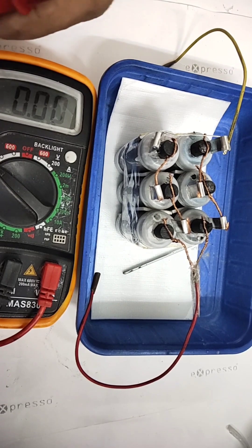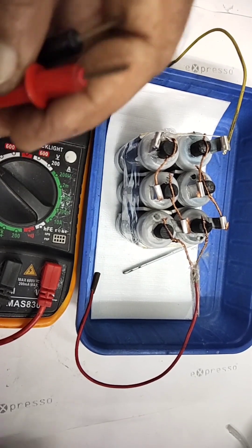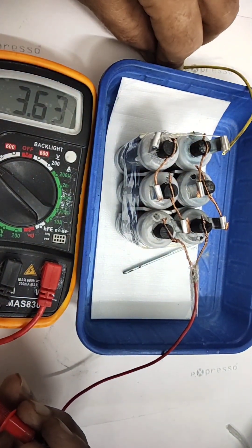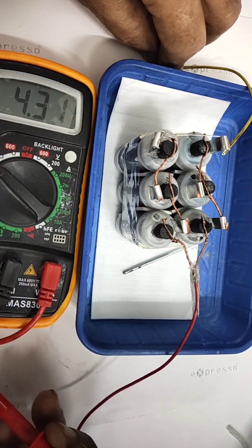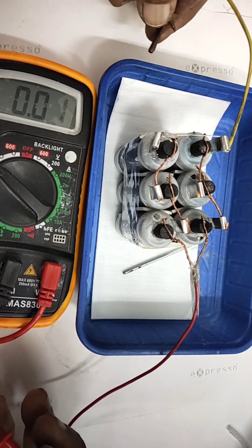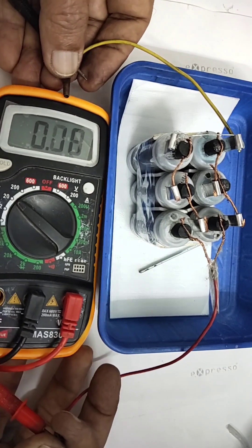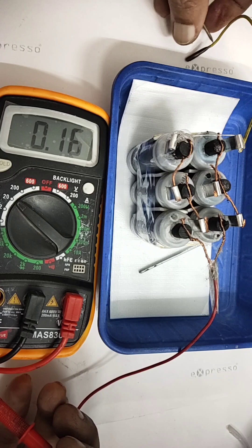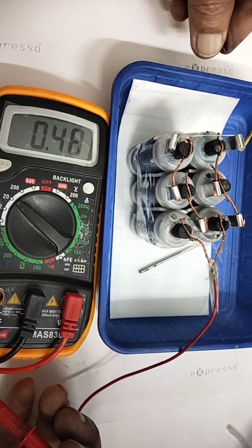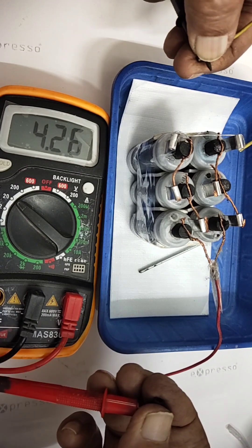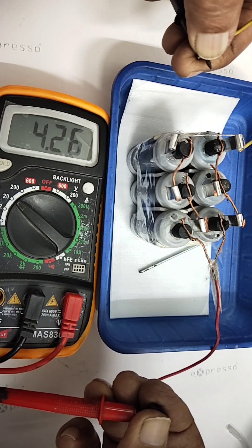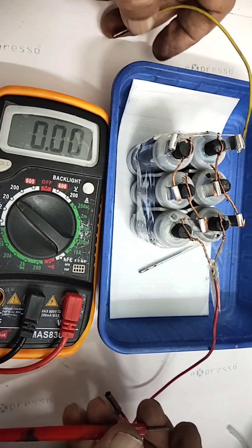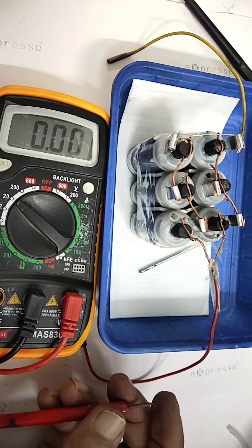We will connect the positive and the negative. You can see the voltage getting increased now. Actually 3 cells are connected. Each cell gives you 1.3. So when you connect 3 cells in series, it should be around 3.9 or 4. See the voltage, nearly 4.26 volts.